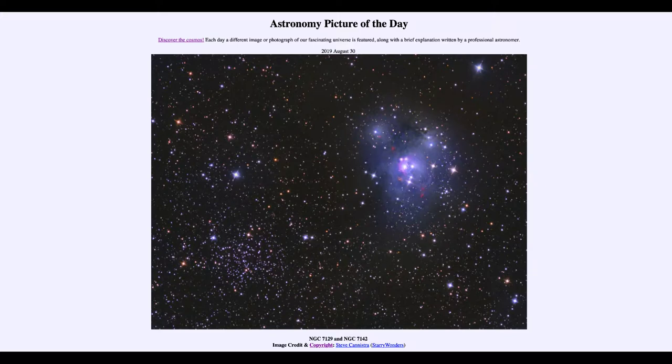Today's picture for August 30th, 2019 is titled NGC 7129 and NGC 7142. In this image we see two objects from the New General Catalog of objects that are not stars, or at least not individual stars in the sky.